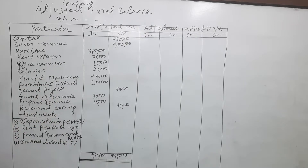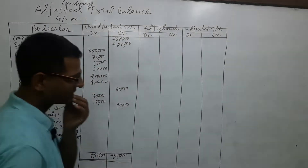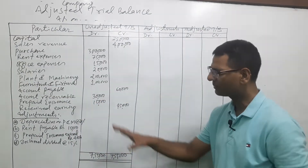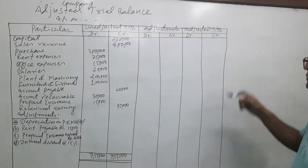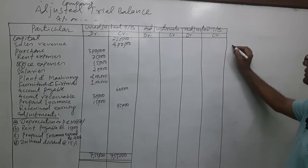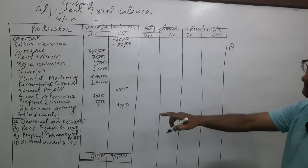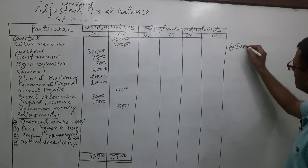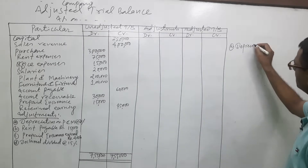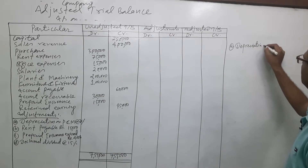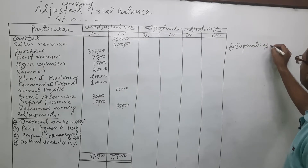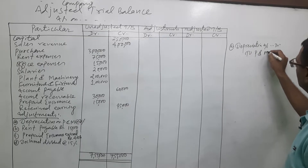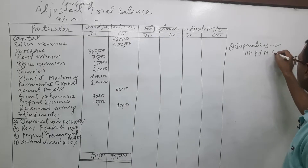First of all, we have to know the journal entry for depreciation on plant and machinery. The entry is: depreciation account debit, credit to plant and machinery. This is the entry.